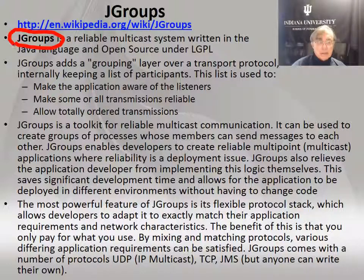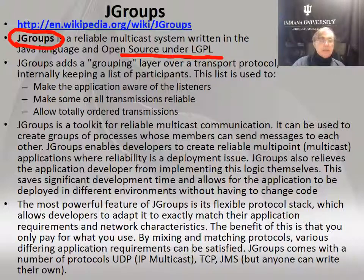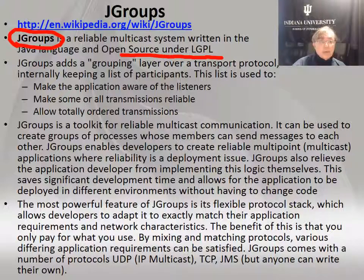Here's a rather different system included here for convenience. This is an open source Java technology called JGroups, which concerns sending messages to many places. When you have a transport protocol it goes from A to B. When you want to do a multicast — a subset of broadcast — you're going from A to B1, B2, B3, and so on.